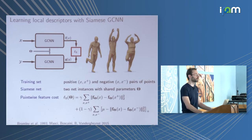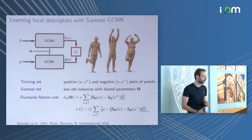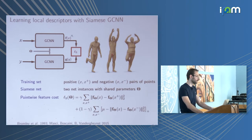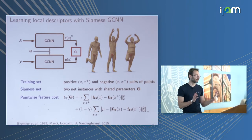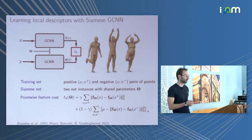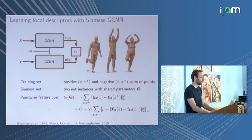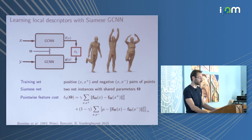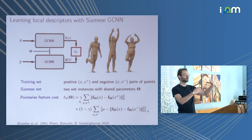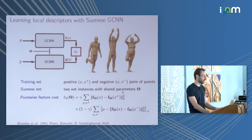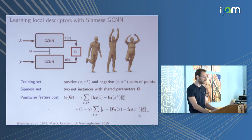One thing we can do with intrinsic convolutional neural networks is learning optimal descriptors using a Siamese configuration of this geodesic CNN. We have a training set of corresponding point examples — positives and negatives. We couple two identical copies of the geodesic CNN with shared parameters and find parameters that minimize a hinge loss: promoting similarity between descriptors at corresponding points and dissimilarity at non-corresponding points.